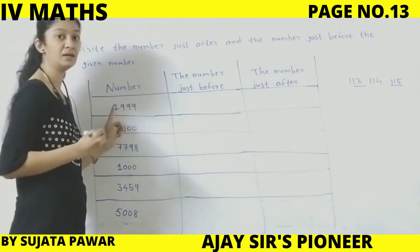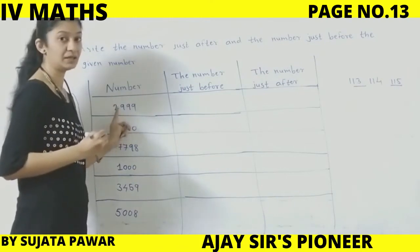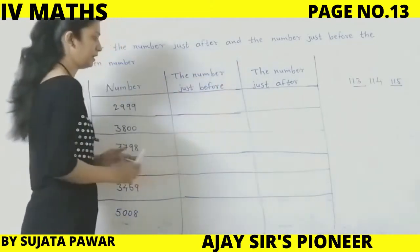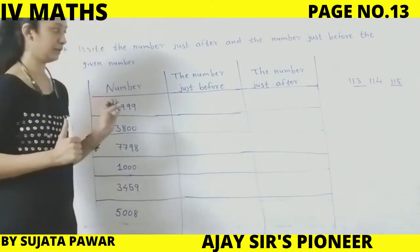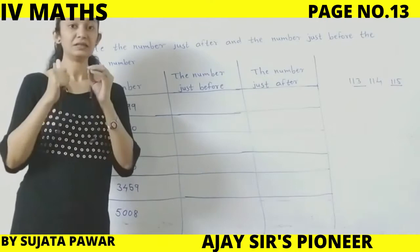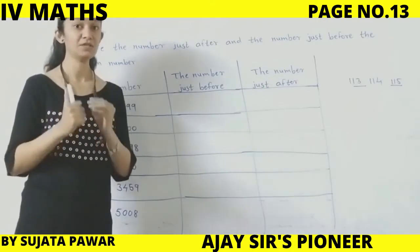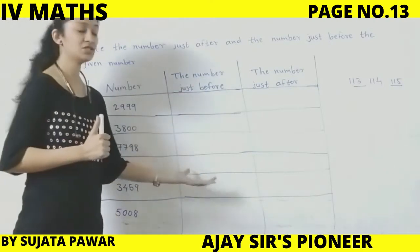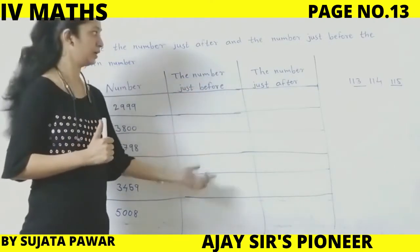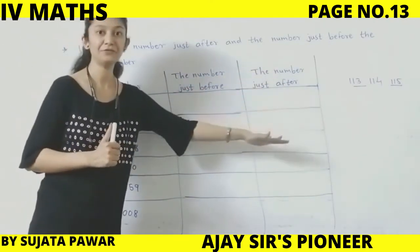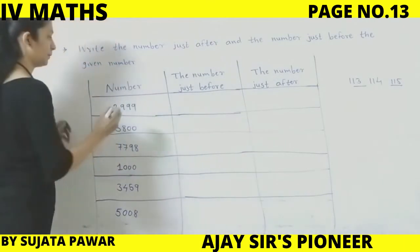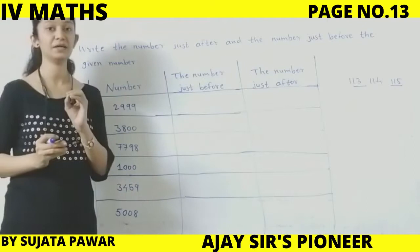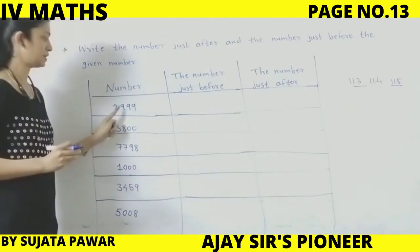You need to draw this table with 3 columns. Humein 3 columns banane hain — first column: number; second column: the number just before; third column: the number just after. Okay, so our first question: the first number is 2999.